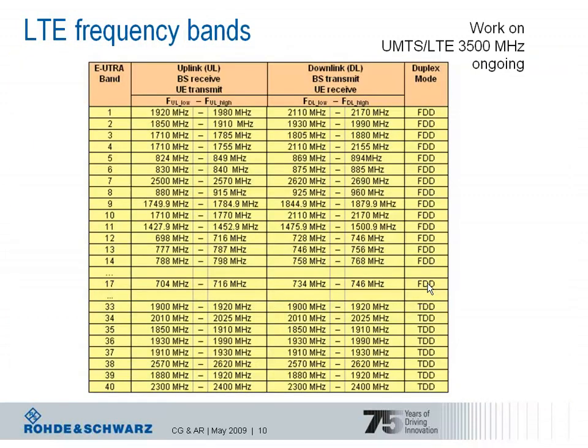This table shows the LTE frequency bands that are specified, taken from 3GPP specifications as of March 2009, showing the specified bands for LTE operation. Bands 1 up to 17 are defined for FDD operation, and bands 33 up to 40 are defined for TDD operation.